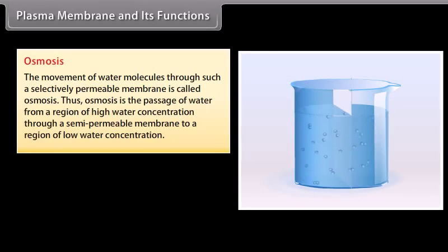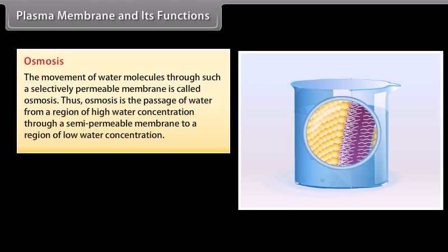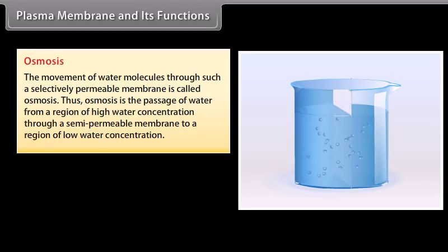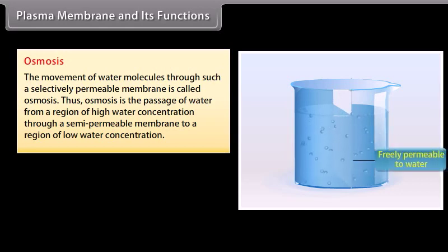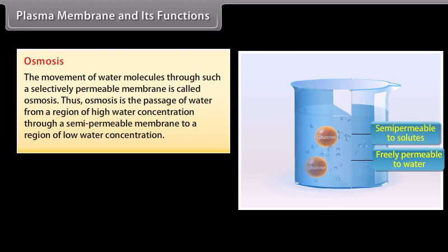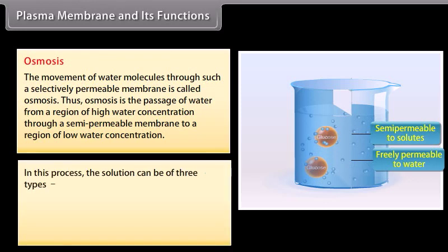Osmosis: the movement of water molecules through a selectively permeable membrane is called osmosis. Osmosis is the passage of water from a region of high water concentration through a semi-permeable membrane to a region of low water concentration. In this process, the solution can be of three types.